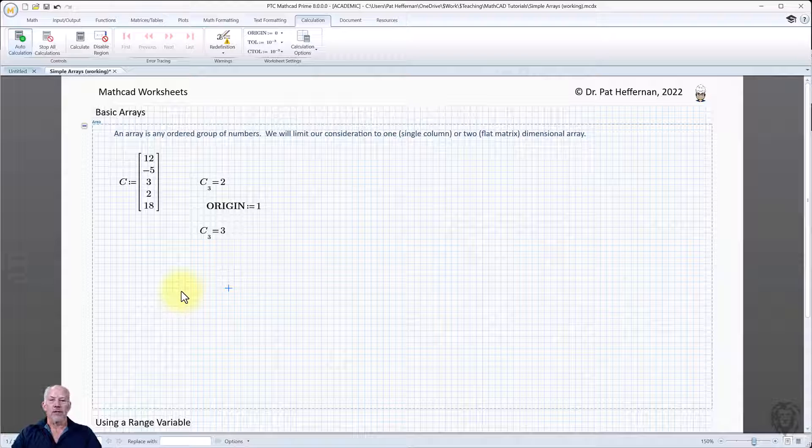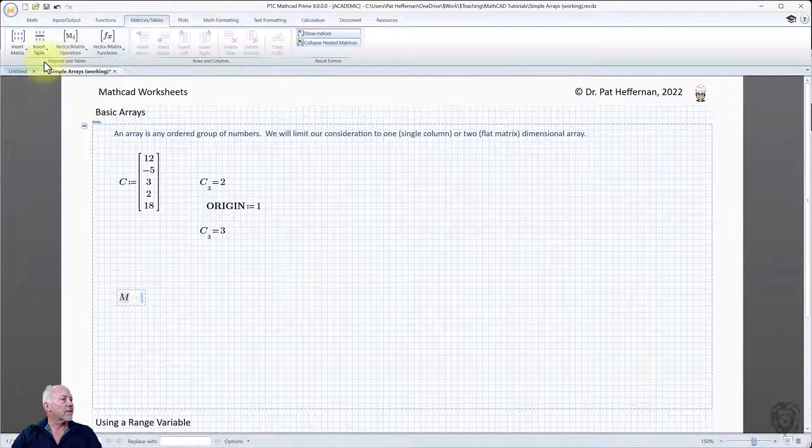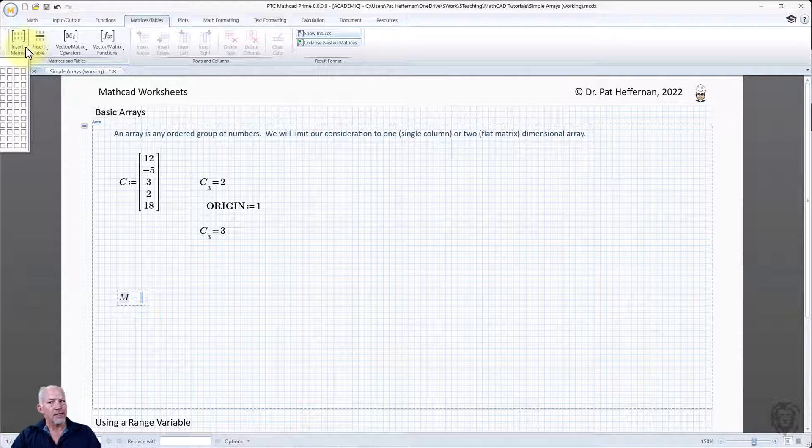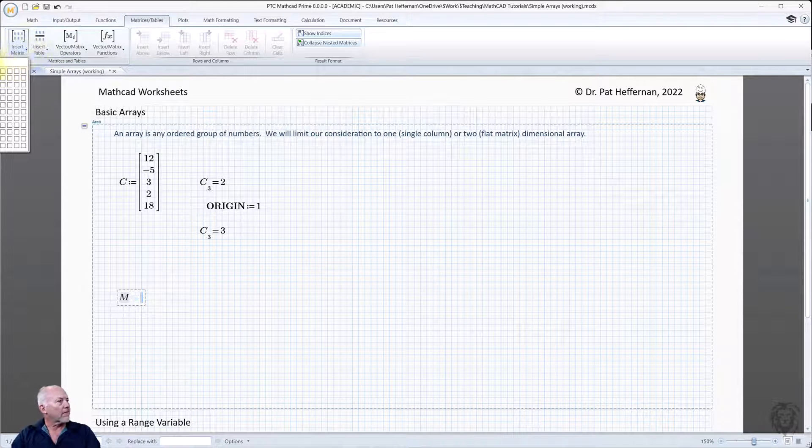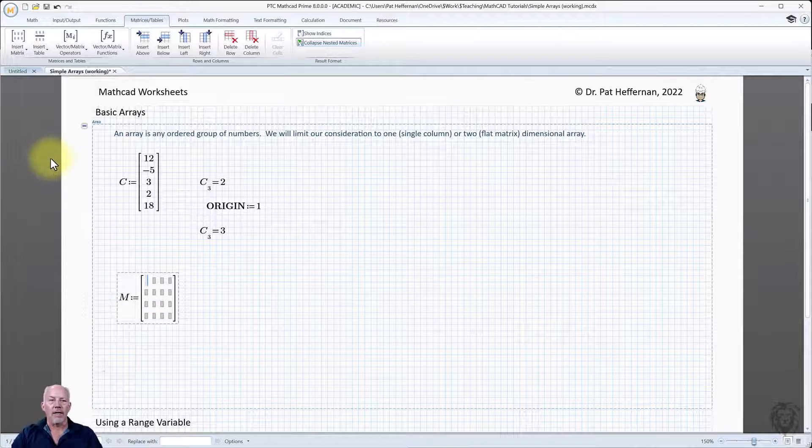So that's your simple one-dimensional array. Let's do up a quick two-dimensional array. So I'm just going to create a matrix. We'll do definition, go up to matrices and tables. And in this case, I'm just going to do a four by four. Let me fill that out and I'll get right back to you.